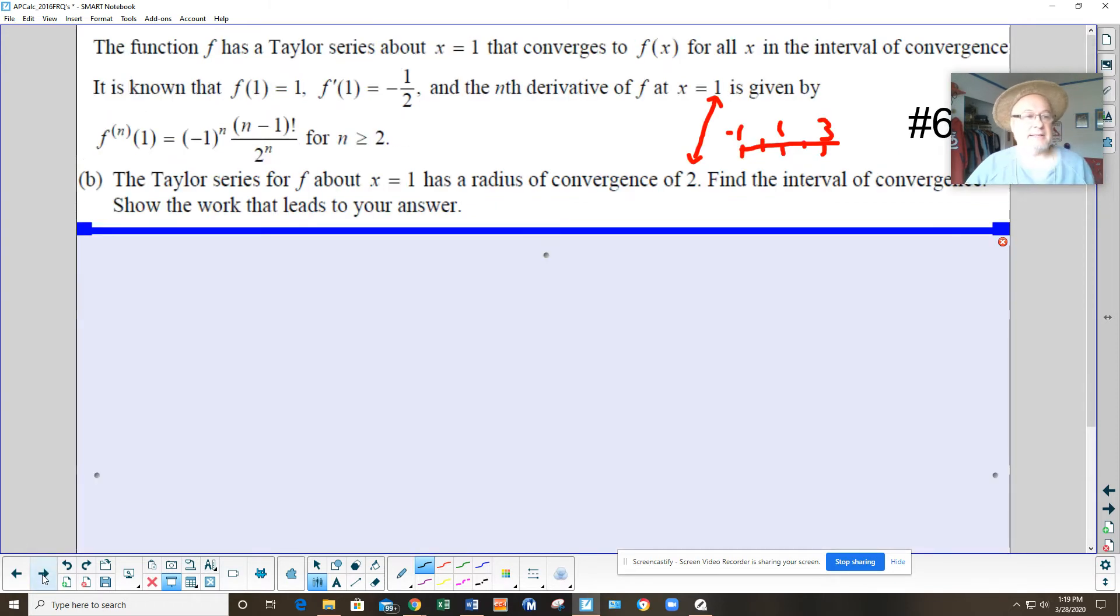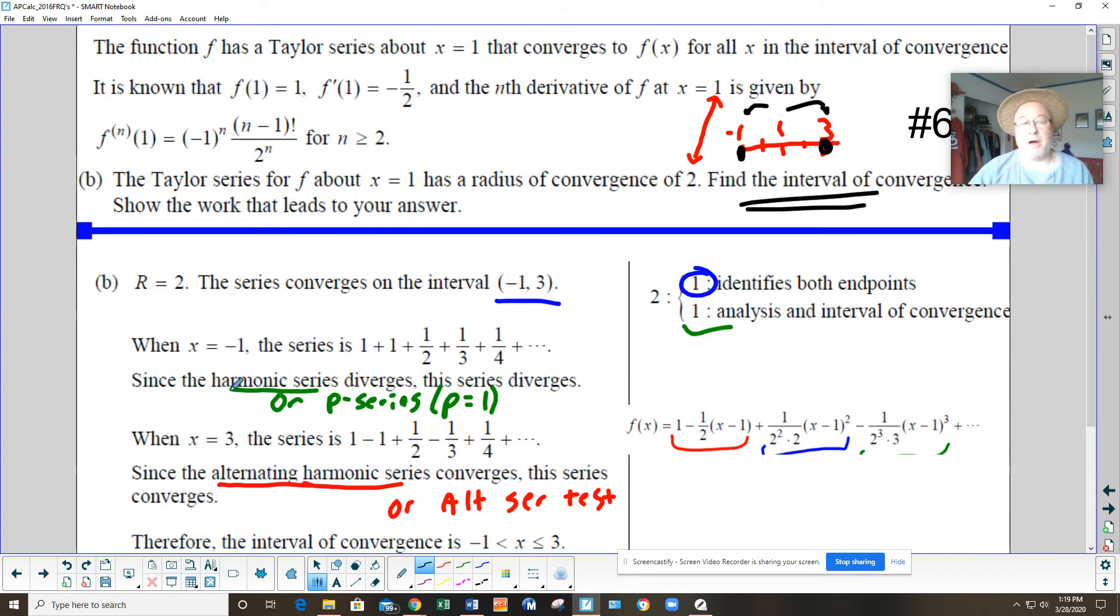So hopefully you got that n term right. It's hard to get that general term sometimes. Moving on to Part B. Part B says the Taylor series for f about x equals 1 has a radius of convergence of 2. So since it's centered at 1 and its radius of convergence is 2, that means it's 2 bigger than 1 to 3 and 2 smaller than 1 to negative 1. So that's kind of your interval. And it does say find the interval of convergence. The only problem is then when you're going from radius to interval, do you include these endpoints? Is this a closed circle or an open circle? Well, we have to figure that out.